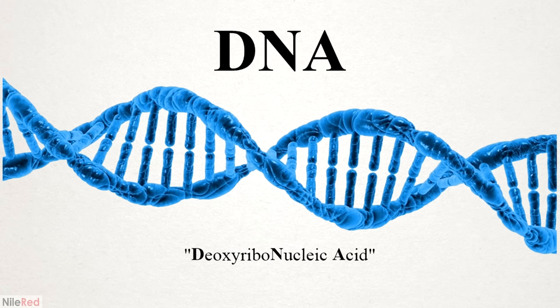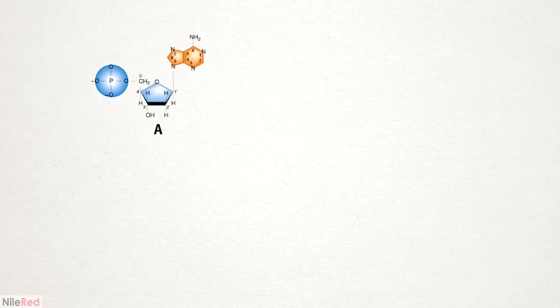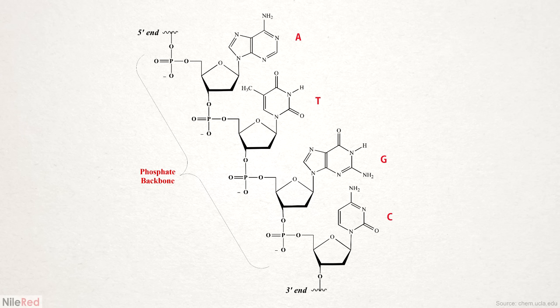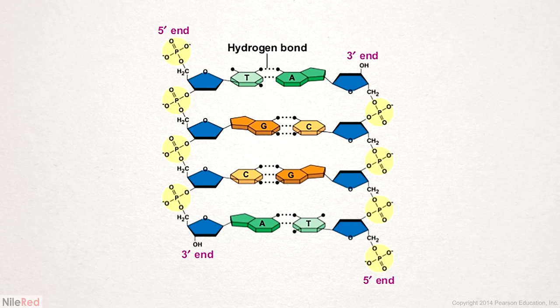Deoxyribonucleic acid, or DNA for short, is the molecule that carries the genetic information in all living organisms. In terms of structure, DNA is a polymer made of four subunits known simply as A, C, T, and G. Each of these subunits has three main components: a unique nitrogenous base, a phosphate group, and a sugar. They connect together through their phosphate groups to form long polymer chains, which are the basis of DNA. The order of the subunits is extremely important — it's how the genetic information is stored.